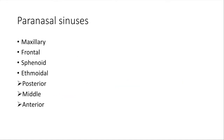There are four paranasal sinuses: the maxillary, frontal, sphenoid, and ethmoidal. The ethmoidal sinuses are further divided anatomically into posterior, middle, and anterior.